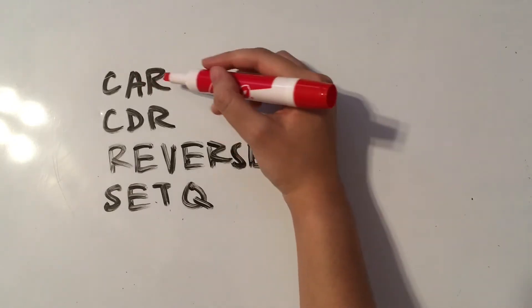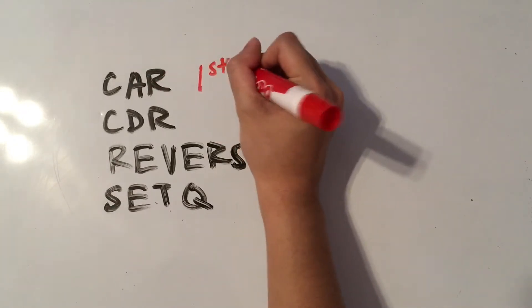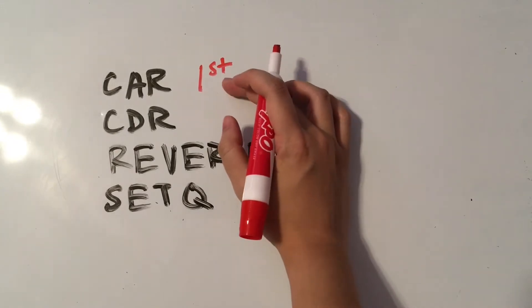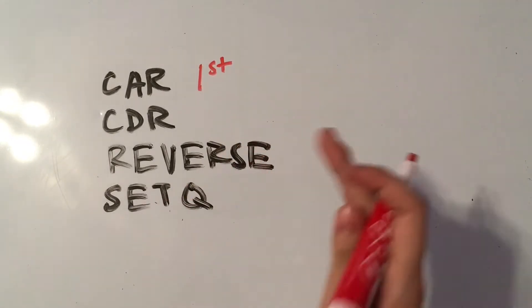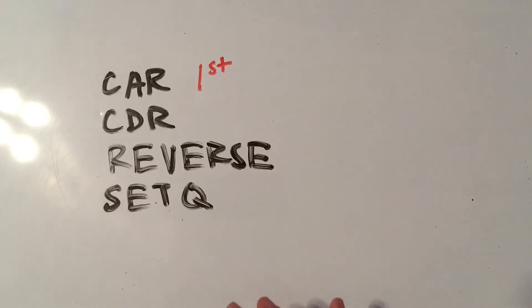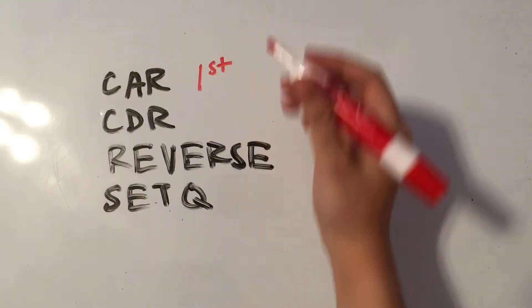So, we have CAR, which is the first one, and it takes the first thing in a list. This first thing can be a single element, or it can even be a list of elements, or it can even be a list of lists if that question is really complicated. So, it takes the first thing and the first thing only.